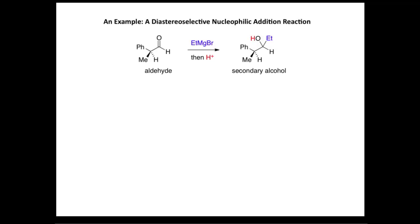Let's have a look at an example of a diastereoselective reaction, in this case a nucleophilic addition reaction. We're going to start by reacting this aldehyde group with a Grignard reagent, then acid, to form a secondary alcohol product. In the aldehyde we have a chiral center, and we've represented the stereochemistry to show one enantiomer. In the secondary alcohol, this carbon atom is chiral. So we have two chiral carbon atoms and the potential for making diastereoisomers.